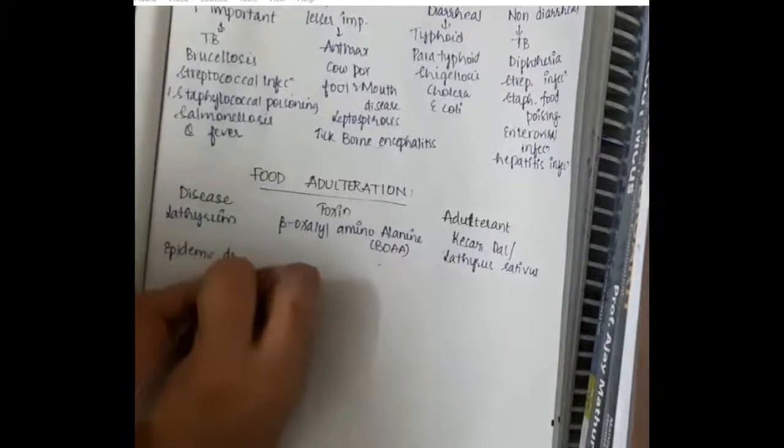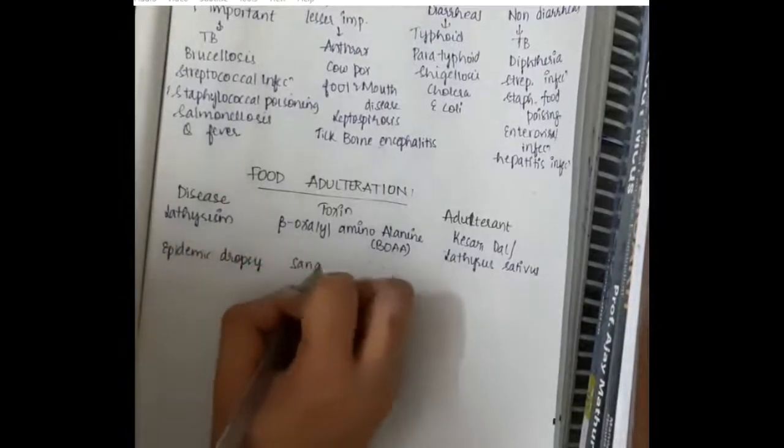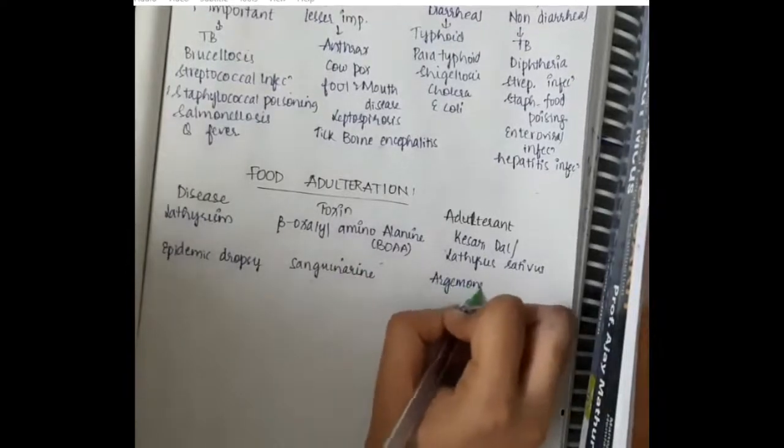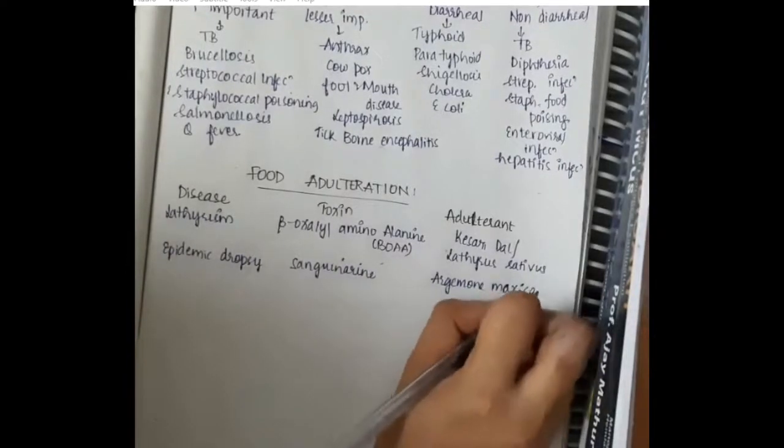For endemic dropsy, the toxin is sanguinarine and adulterant is argemone mexicana oil.